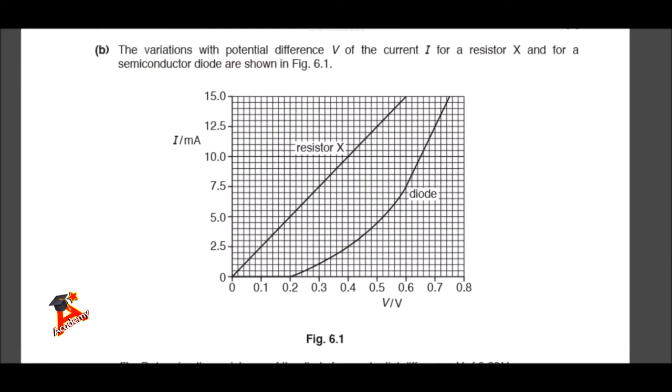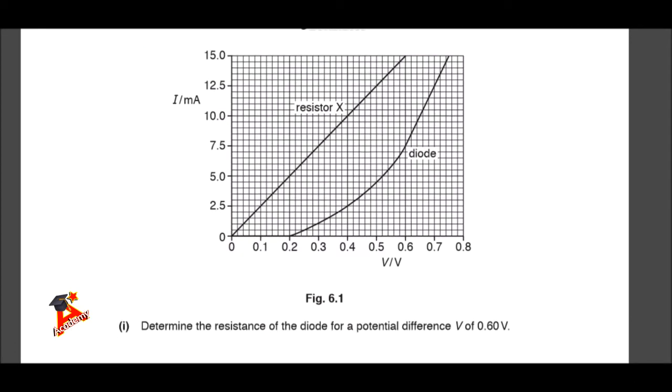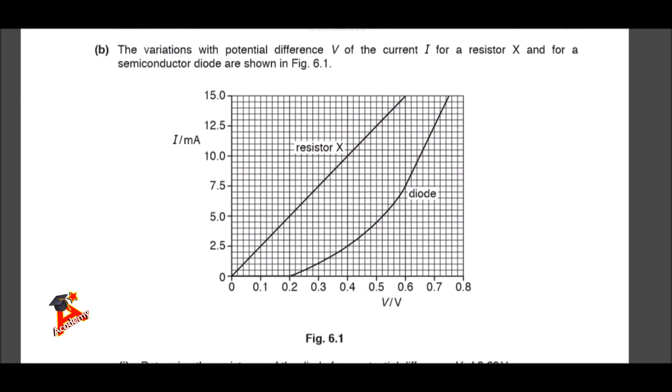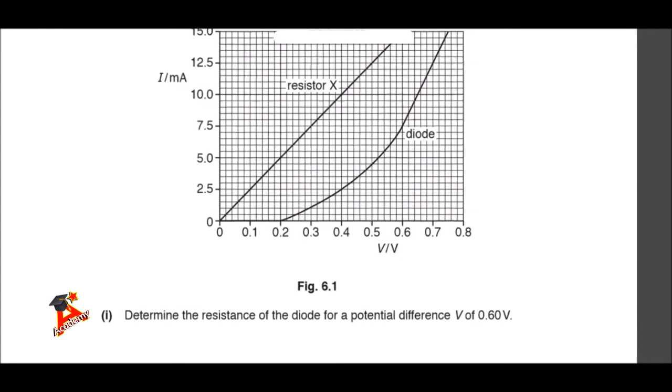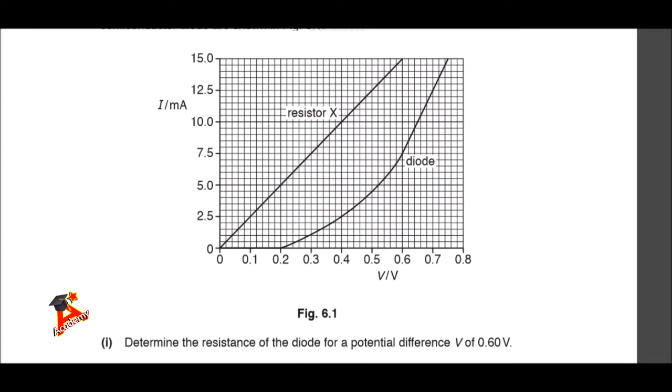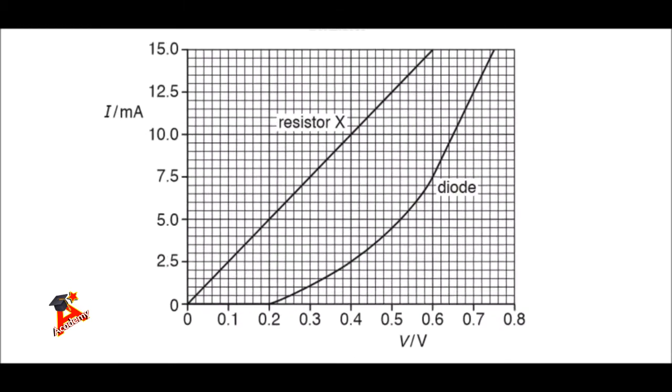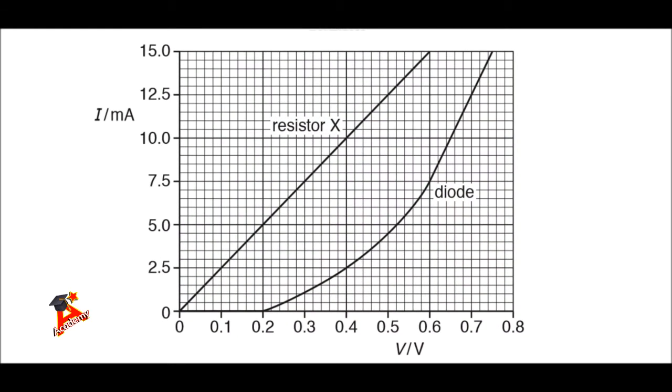The other part of the question says, the variation with potential difference of the current for a resistor X and for a semiconductor are shown, determine the resistance of the diode for a potential difference of 0.6 volts. At 0.6 volts, the current is 7.5 milliamps.